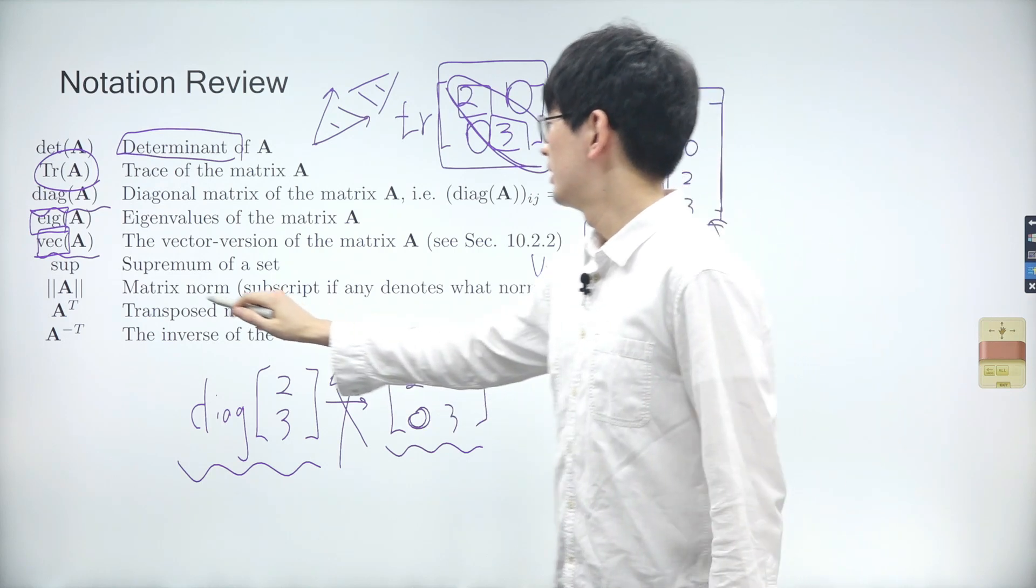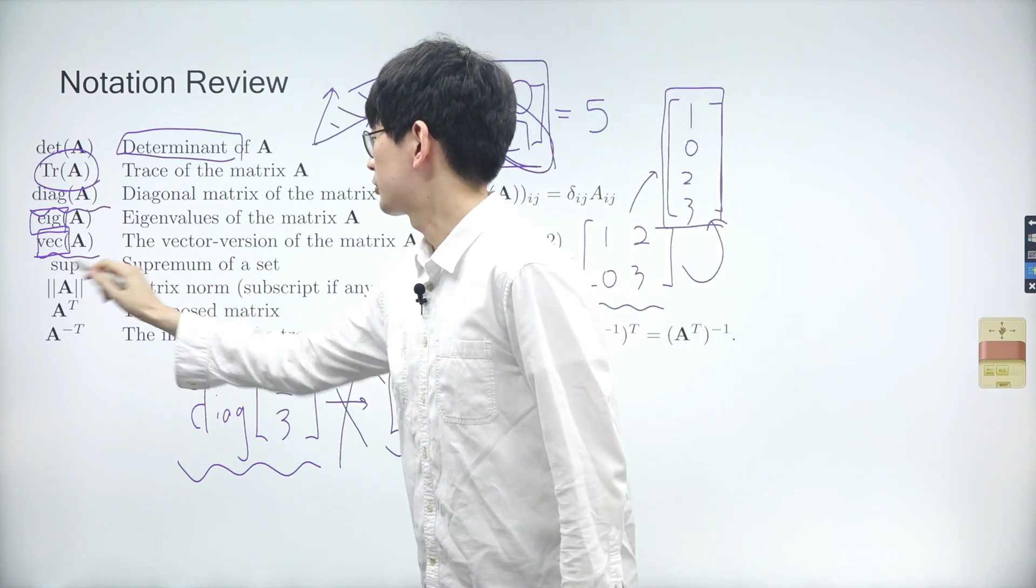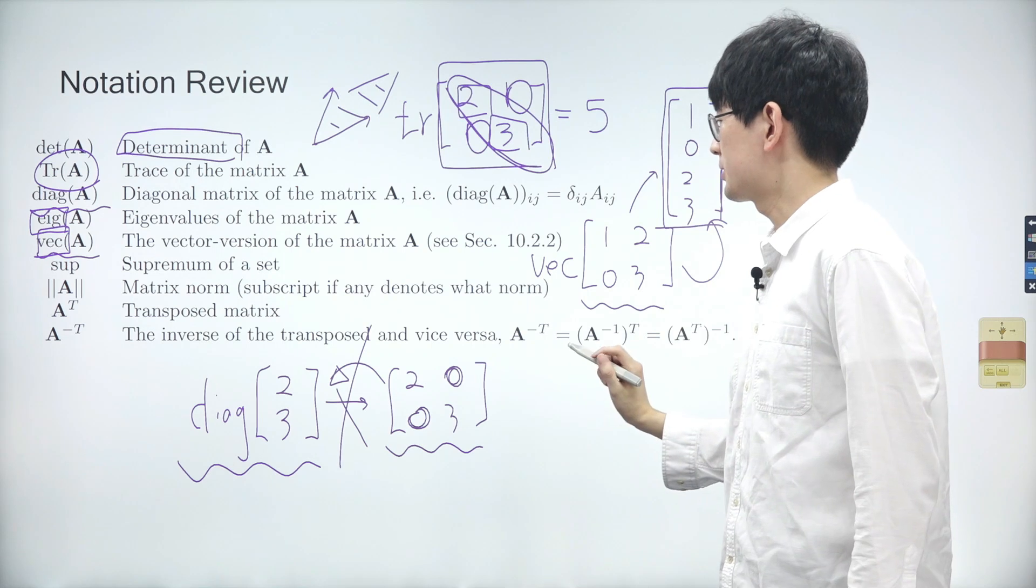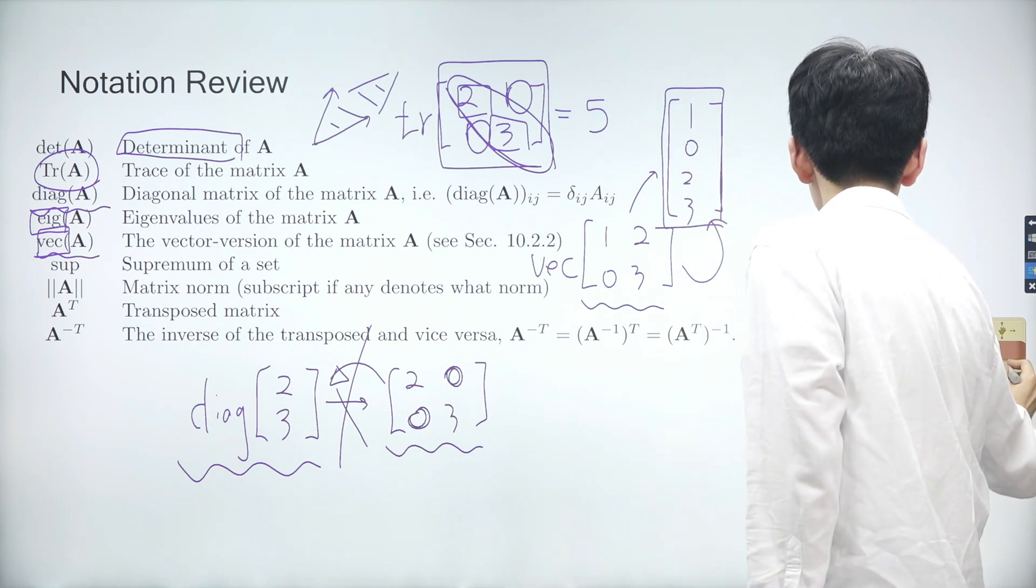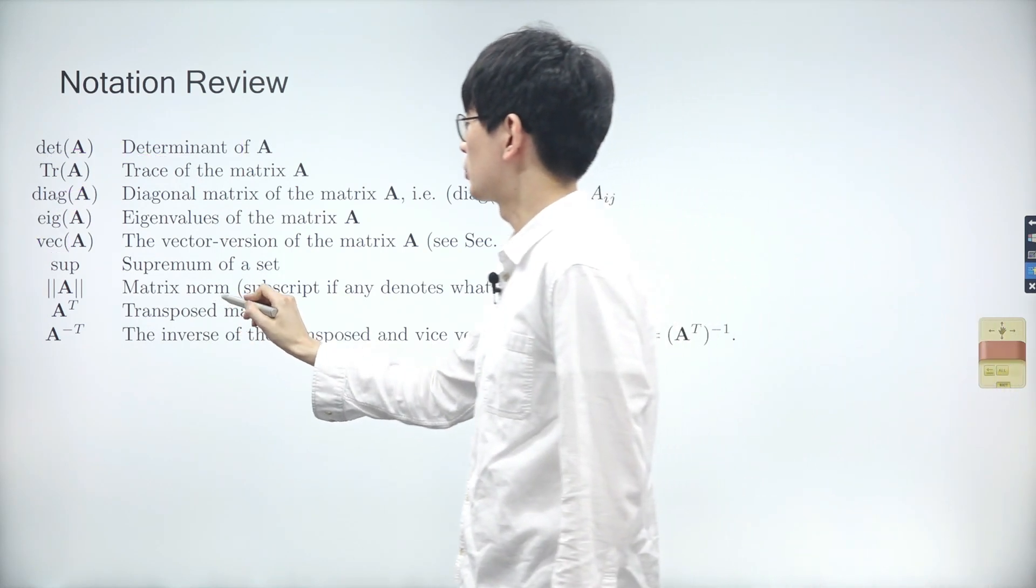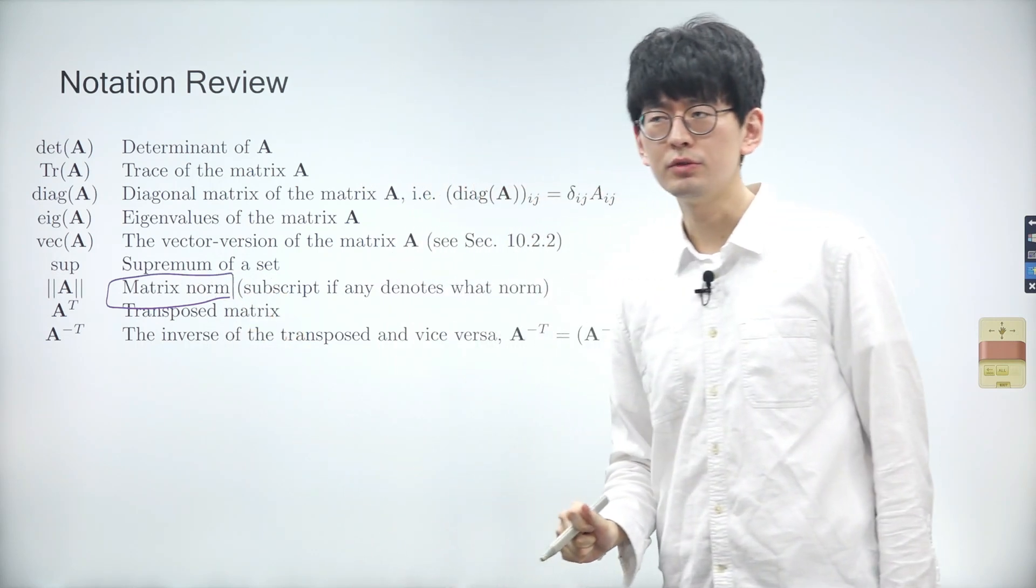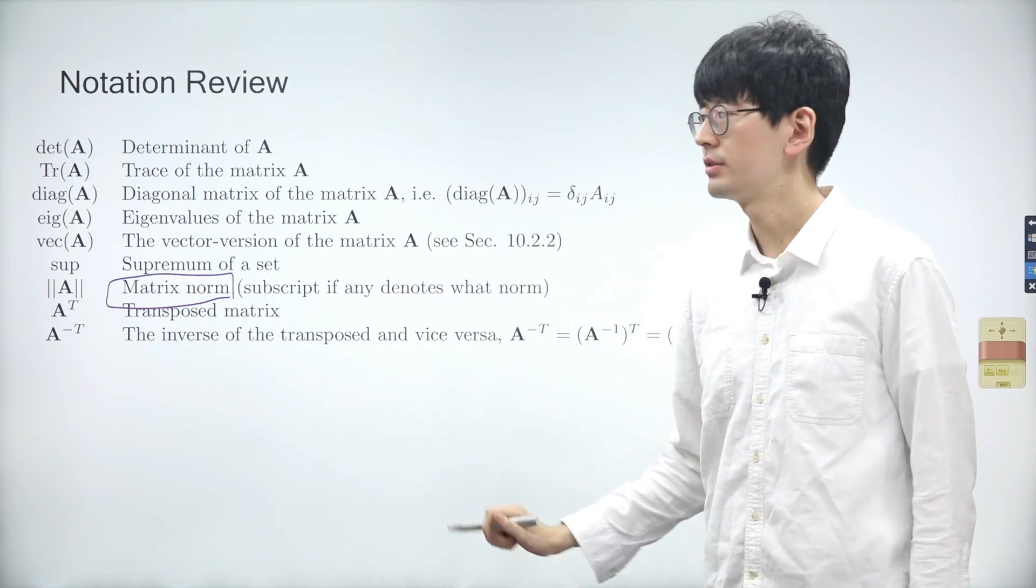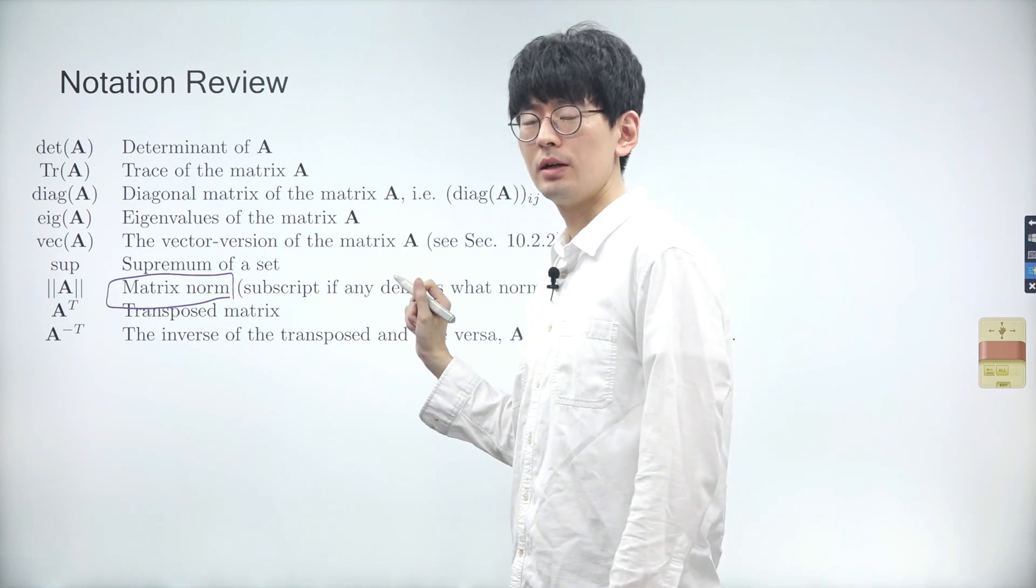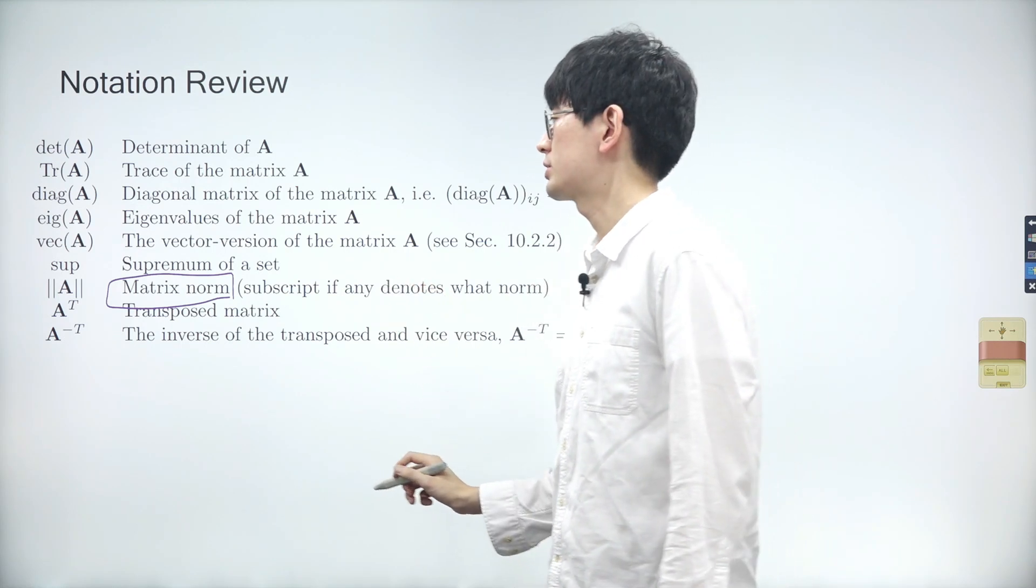Let's skip the supremum of a set since it has less importance for this course. Matrix norm does not appear frequently in basic statistics. However, when you apply linear algebra in developing an algorithm or an AI model, it will appear very often.